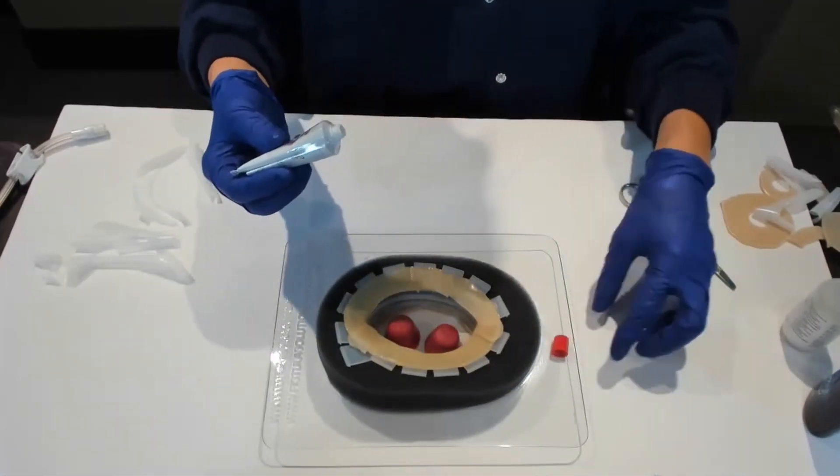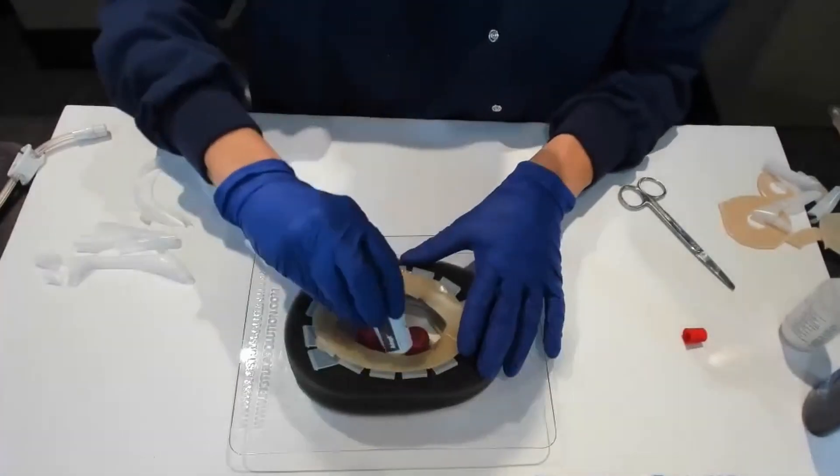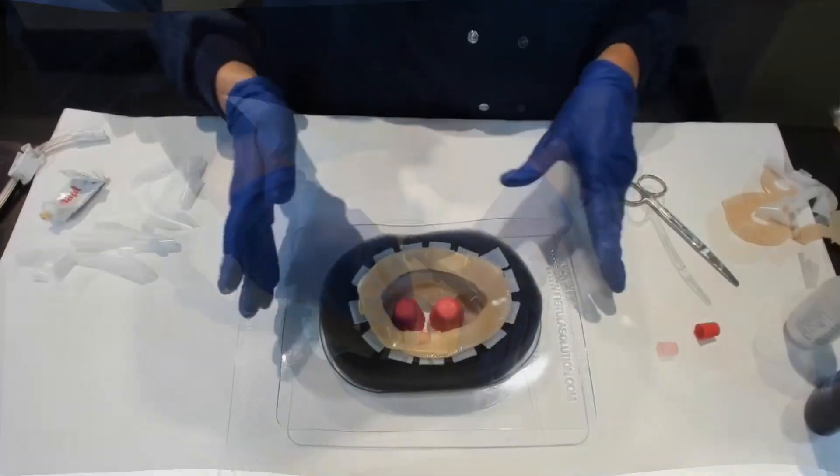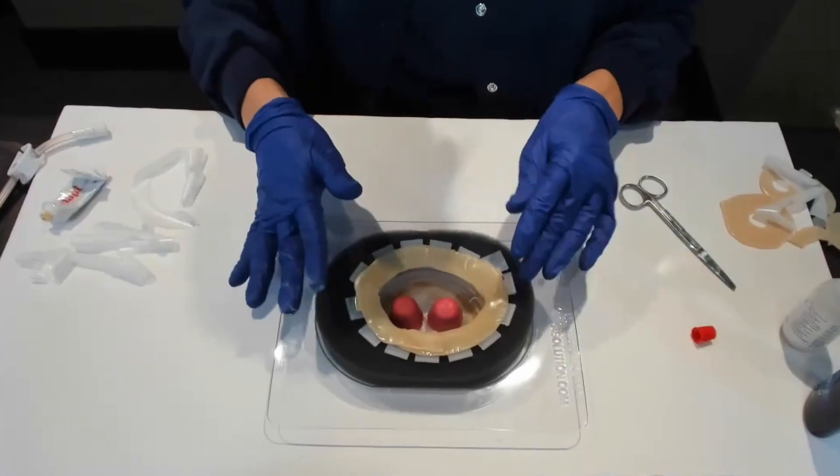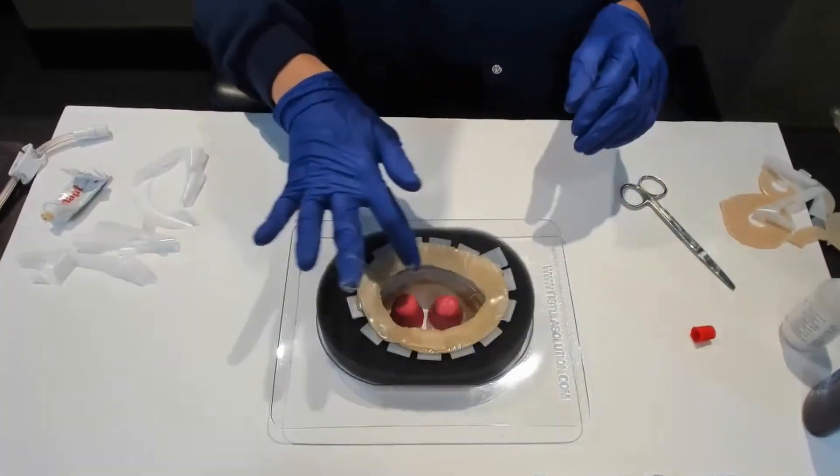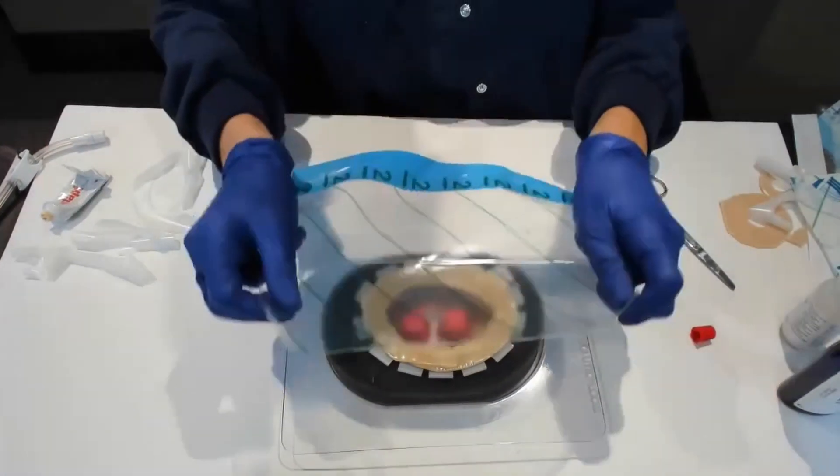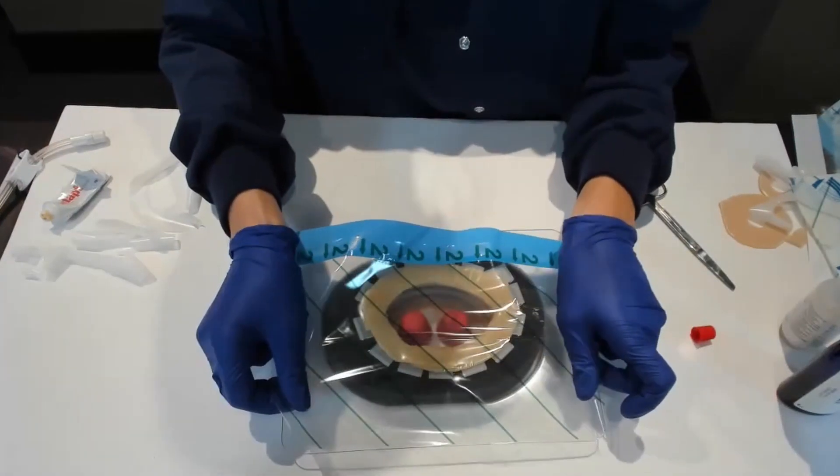I put a little bit of stoma paste at the base. Then we're going to try and seal this up now that we have the hydrocolloids at the top, the base, and then there's stoma paste on the inner ring. I just set it over there on the tray.